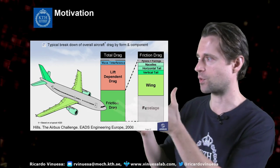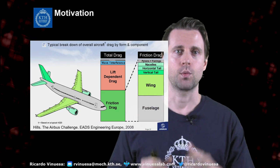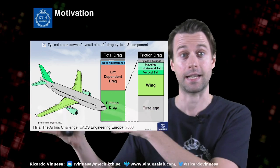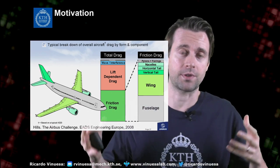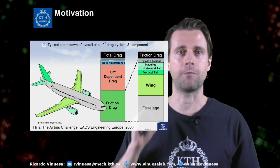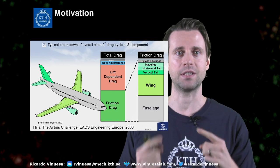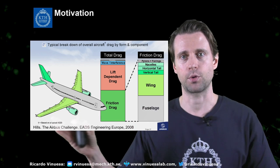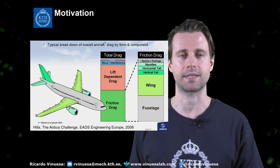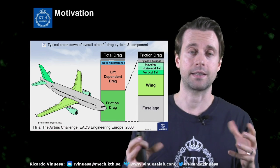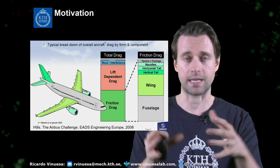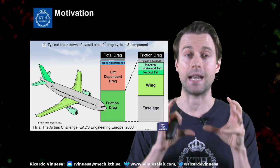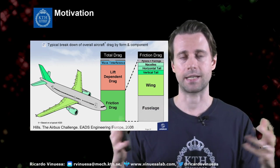The motivation for this work comes from a slide by Airbus where we can look at the different components of drag in a typical airliner. Around 50% of the total drag is associated with friction, and 40% comes from the lift-induced component — which happens with wingtip vortices on finite wings. Studying turbulent boundary layers with pressure gradients and finite wings can potentially help us understand around 90% of total drag in commercial airliners.